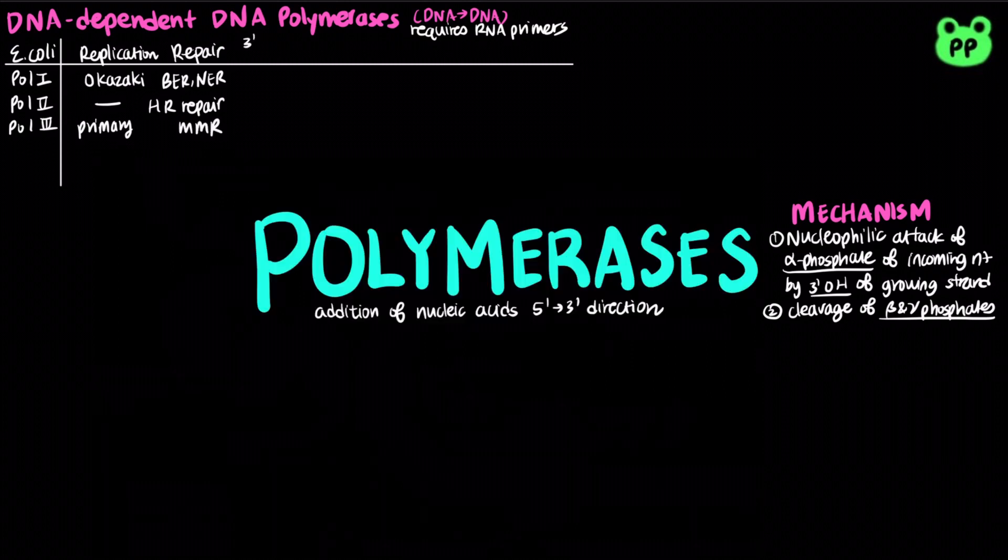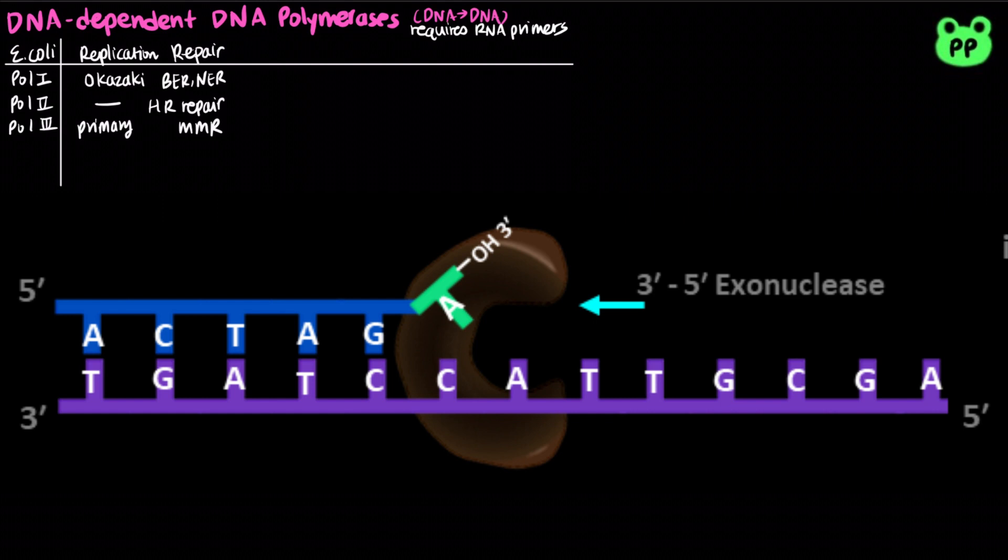DNA polymerases 1, 2, and 3 contain 3 prime to 5 prime exonuclease activity, which allows incorrect base pairs to be removed. This proofreading activity contributes to high-fidelity DNA replication.